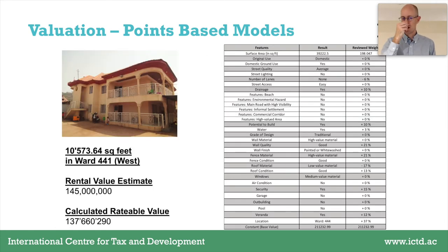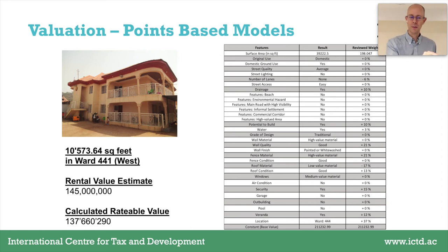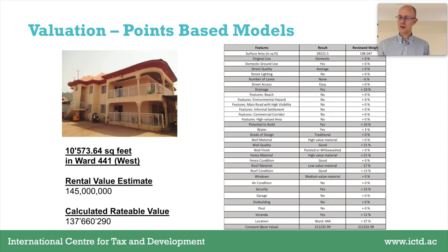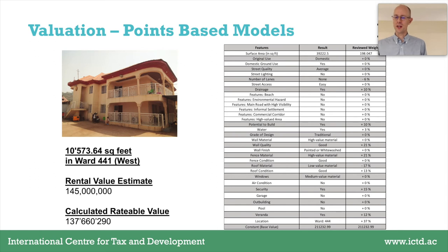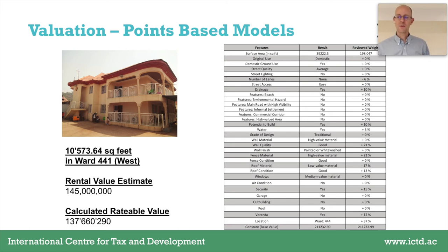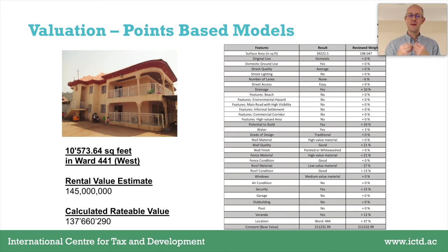Here is an illustration of what this looks like in practice: you have a picture of the property, its location, its size, and on the right side each characteristic recorded by enumerators and the impact of each on the taxable value. For example, higher quality walls increase taxable value by 21%, a high quality fence adds 21%, and being in a high-value location adds 37%. Every taxpayer can access that information to verify its accuracy and understand the basis for their assessment.